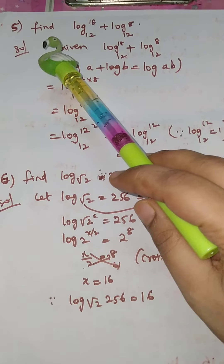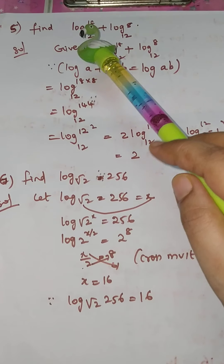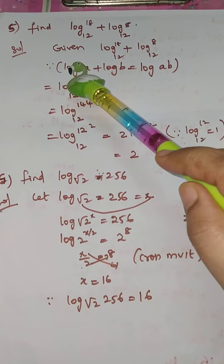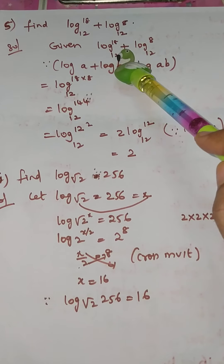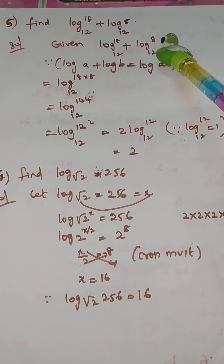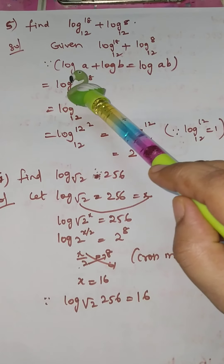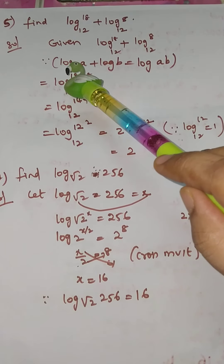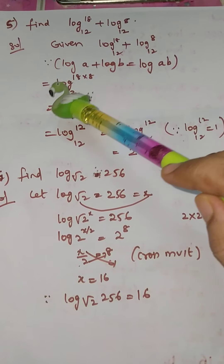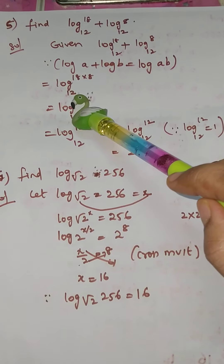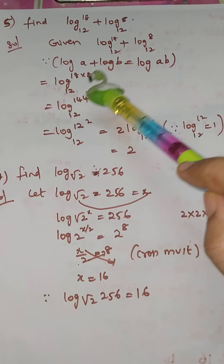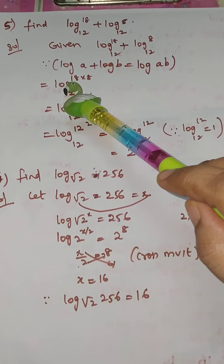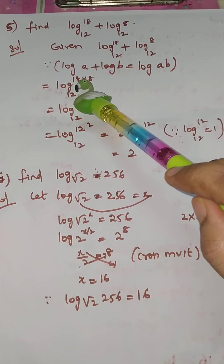Fifth problem: find log₁₂(18) + log₁₂(8). Since log a + log b equals log(ab), we apply this formula. We are taking log base 12 throughout, and we need to take the product of the two arguments.